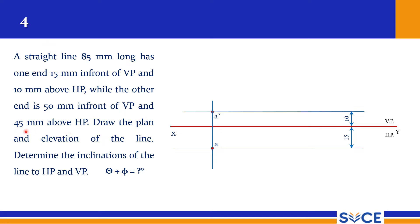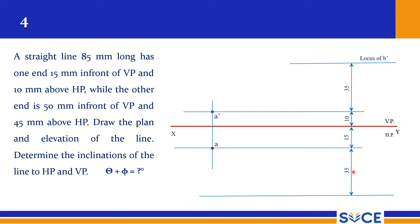The other end is 50 mm in front of VP and 45 mm above HP. From the XY reference line it should be 45 mm — that is 10 plus 35 equals 45 mm. For VP, 15 mm is already taken so 35 plus 15 equals 50 mm. Draw the locus of B-dash and the locus of B. We now have all locus lines: locus of A-dash, locus of A, locus of B-dash, and locus of B. Since A is the fixed end, no need to label its locus separately.